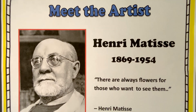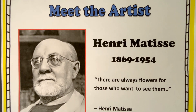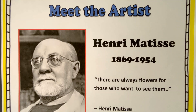Henri Matisse was born in France, the oldest son of a wealthy grain merchant. In 1887, he went to Paris to study law. But after he fell ill with appendicitis and his mom bought him art supplies to pass the time, he found a new passion and set out to be an artist. Initially, he painted still lifes and landscapes in a traditional style. But after being introduced to Impressionism and the work of Van Gogh, his style changed completely.